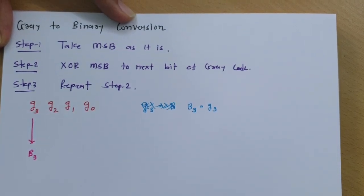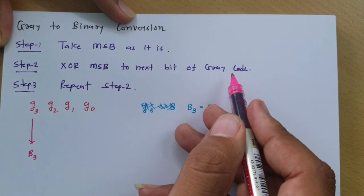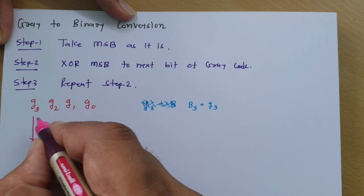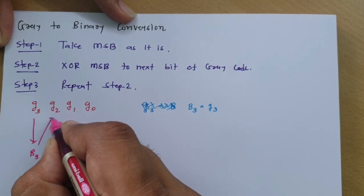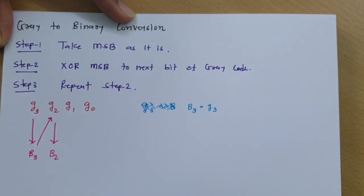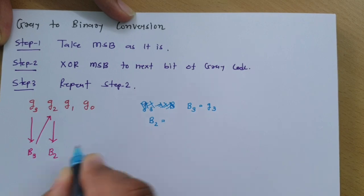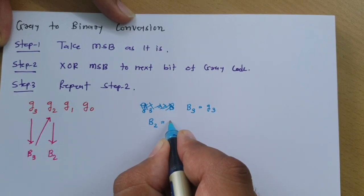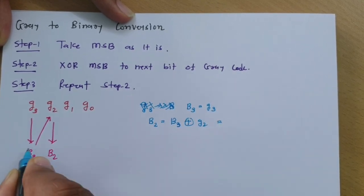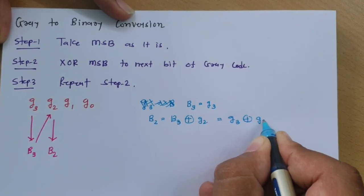Now, XOR this MSB with the next bit of the gray code. We need to XOR B3 with G2 to get B2. So B2 = B3 ⊕ G2. And since B3 equals G3, we can write B2 = G3 ⊕ G2.